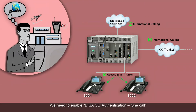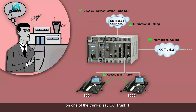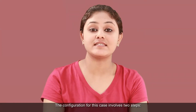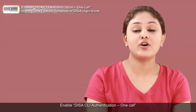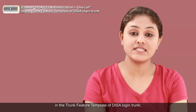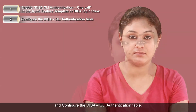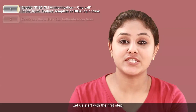We need to enable DISA CLI Authentication One Call on one of the trunks, say CO trunk 1. The configuration for this case involves two steps: first, enable DISA CLI Authentication One Call in the trunk feature template of the DISA login trunk; and second, configure the DISA CLI Authentication Table. Let us start with the first step.